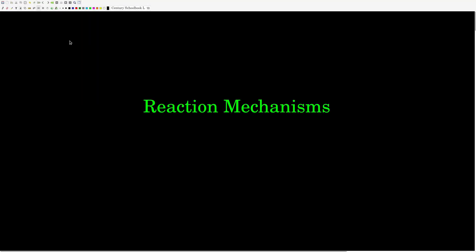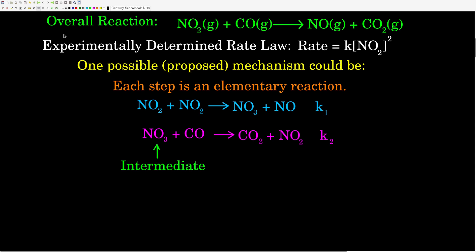This video is about reaction mechanisms. Let's look at the reaction between nitrogen dioxide and carbon monoxide to form nitrogen monoxide and carbon dioxide. We did some experiments and figured out experimentally that the rate law for this reaction is that the rate is equal to K times the concentration of nitrogen dioxide squared. It's second order in nitrogen dioxide and zeroth order in carbon monoxide.